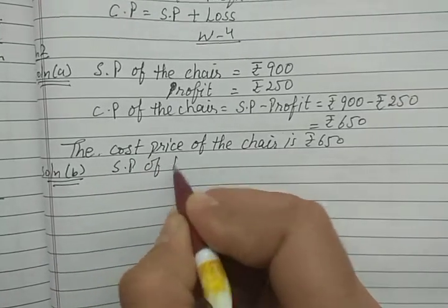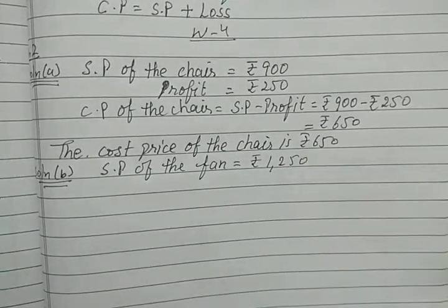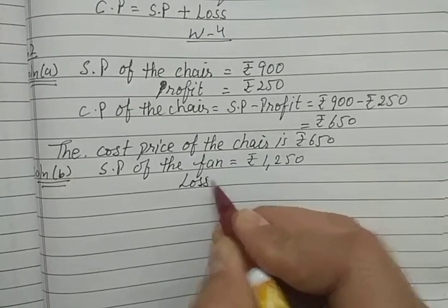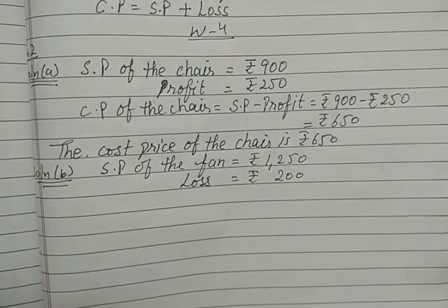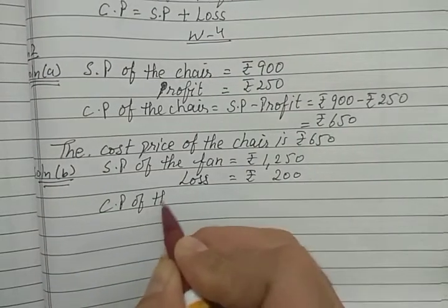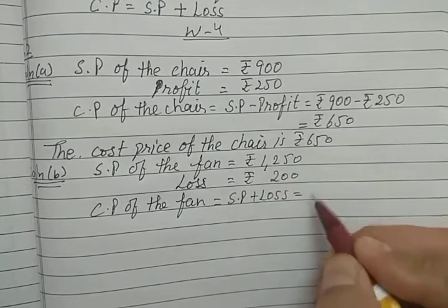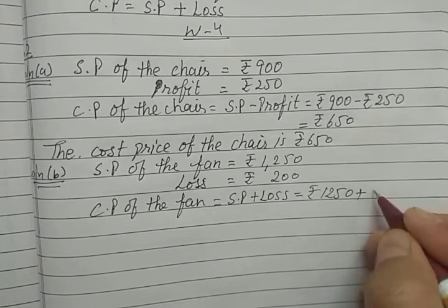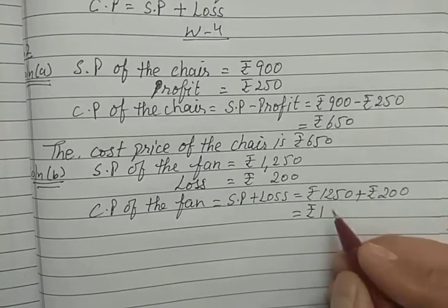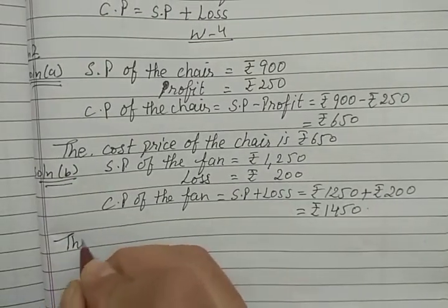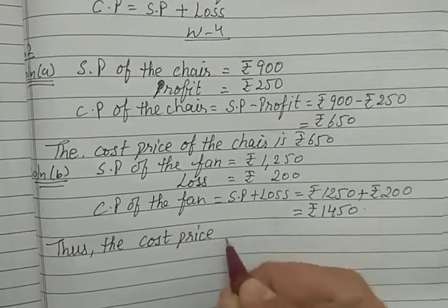Solution B: Selling price of the fan is rupees 1250 and loss is rupees 200. To find the cost price, we use the formula: cost price equals selling price plus loss. So 1250 plus 200 gives us rupees 1450. The cost price of the fan is rupees 1450. Since there is a loss, the cost price is higher than the selling price.